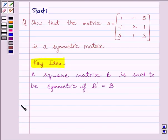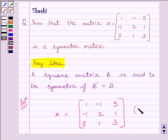Let us now start with the solution. We know A equals matrix [1, -1, 5; -1, 2, 1; 5, 1, 3] as given in the question.